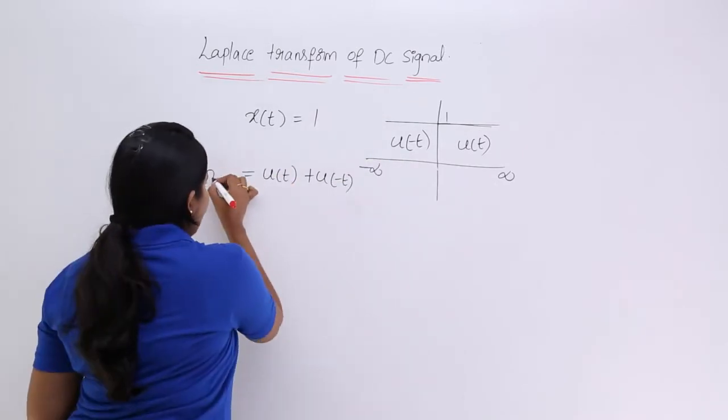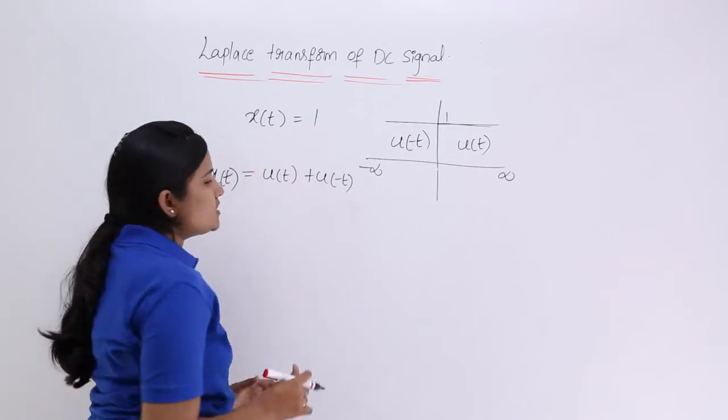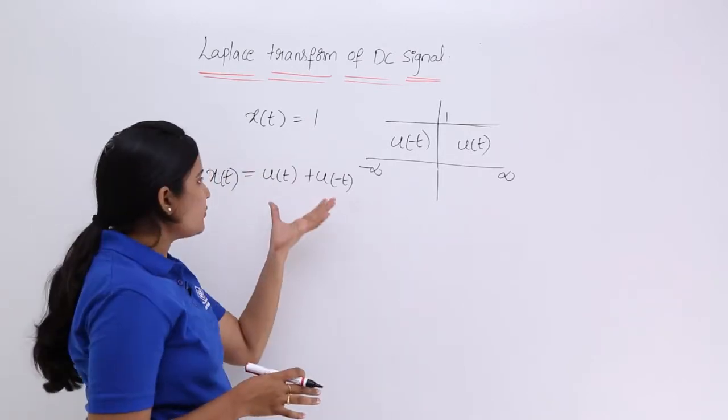So my X of T, now onwards I use it to write my DC signal, now onwards I am going to write like this u of T plus u of minus T.